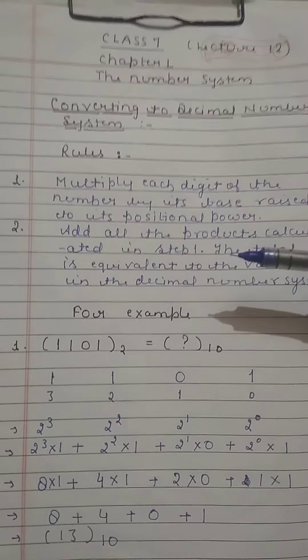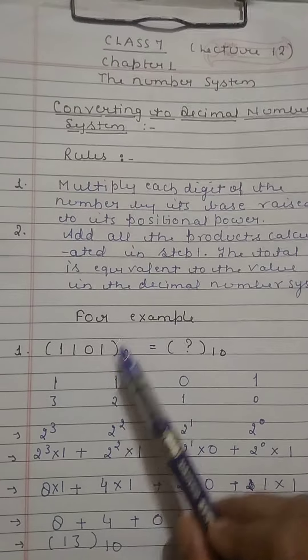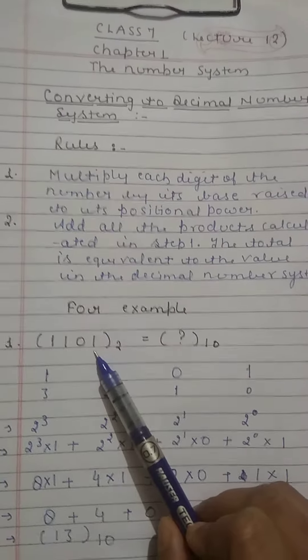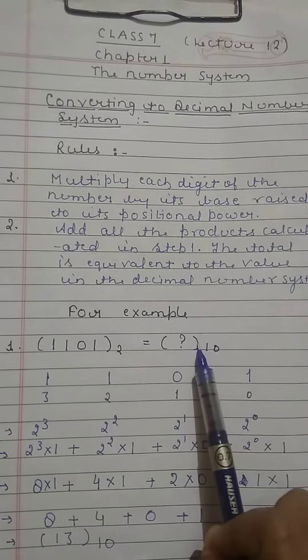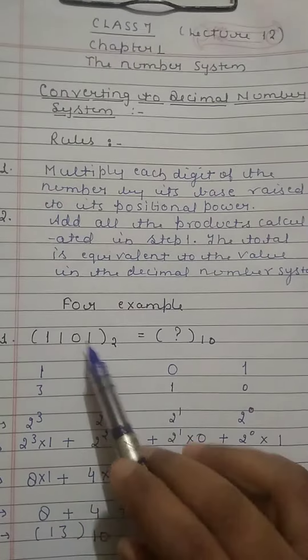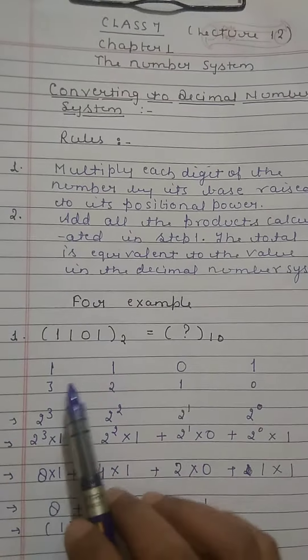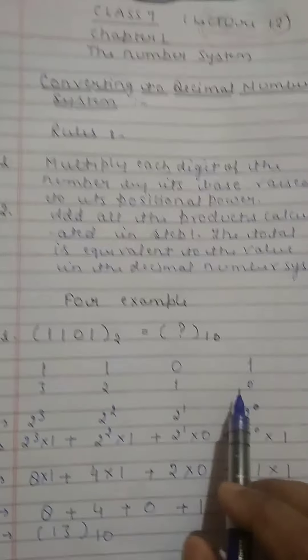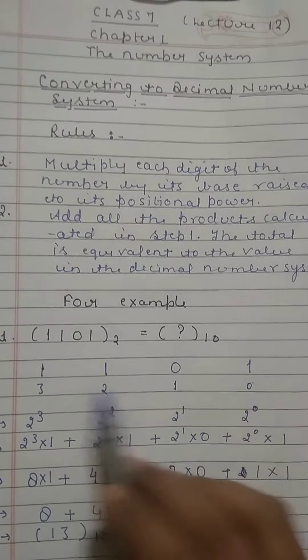Let us understand with an example. In the first one we have taken a binary number and this binary number we have to convert to the decimal number. To convert this binary to the decimal, firstly we will note down all digits separately and from the right side we will write the position of all digits.